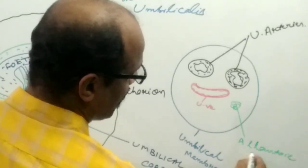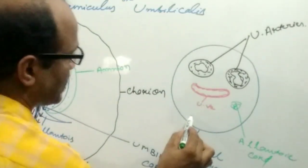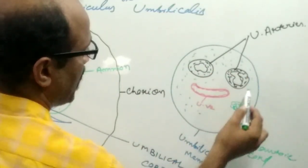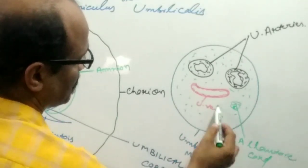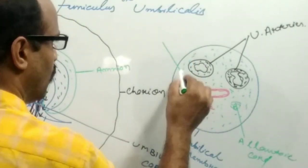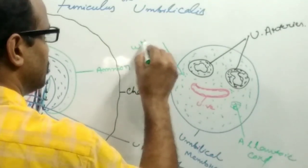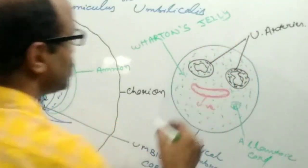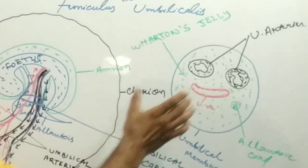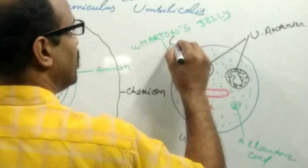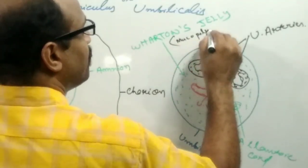These blood vessels are present inside a jelly-like gelatinous material. Such gelatinous material is known as Wharton's jelly. Wharton's jelly provides protection to the blood vessels — the arteries and the vein. It is made up of mucopolysaccharides.